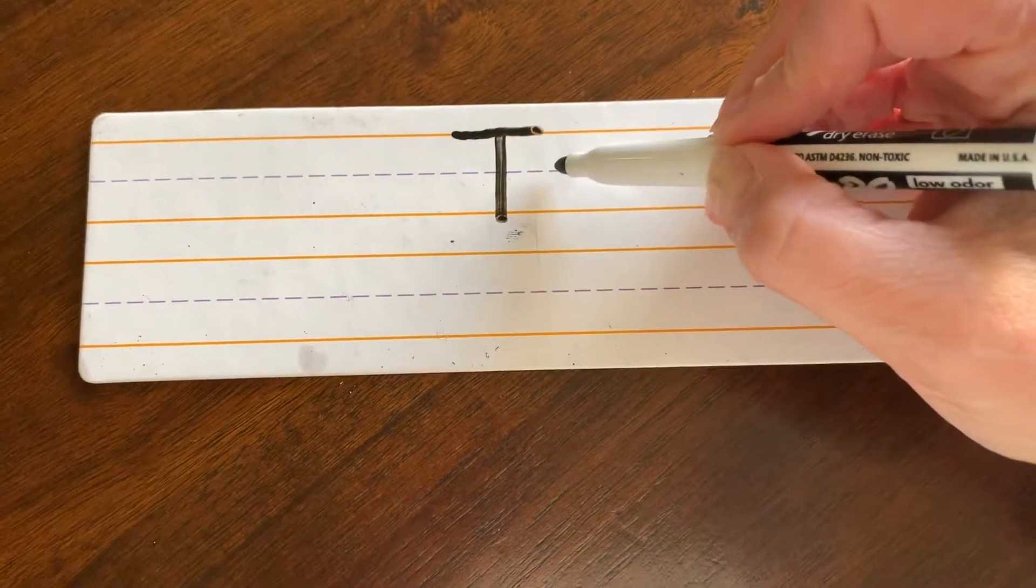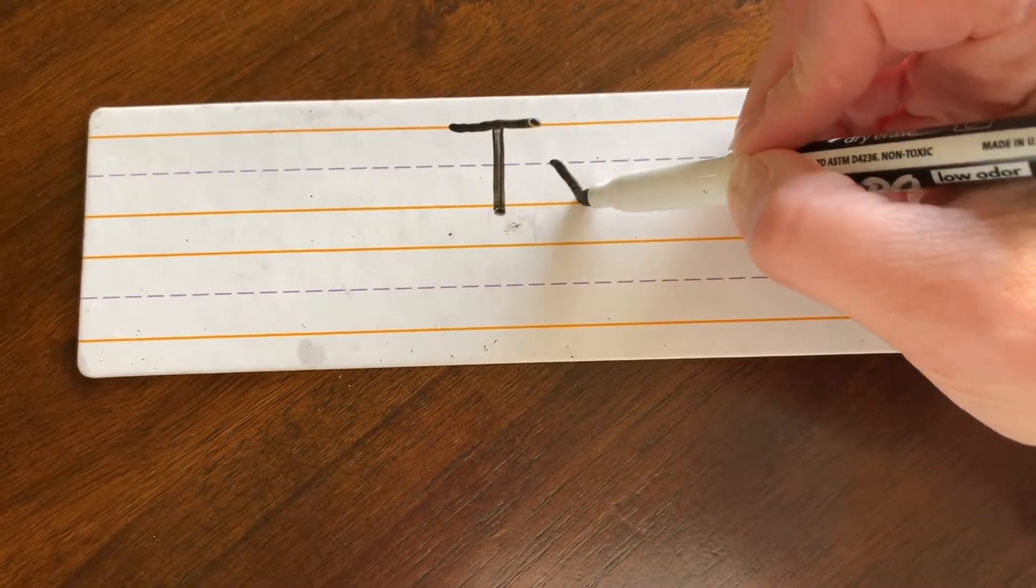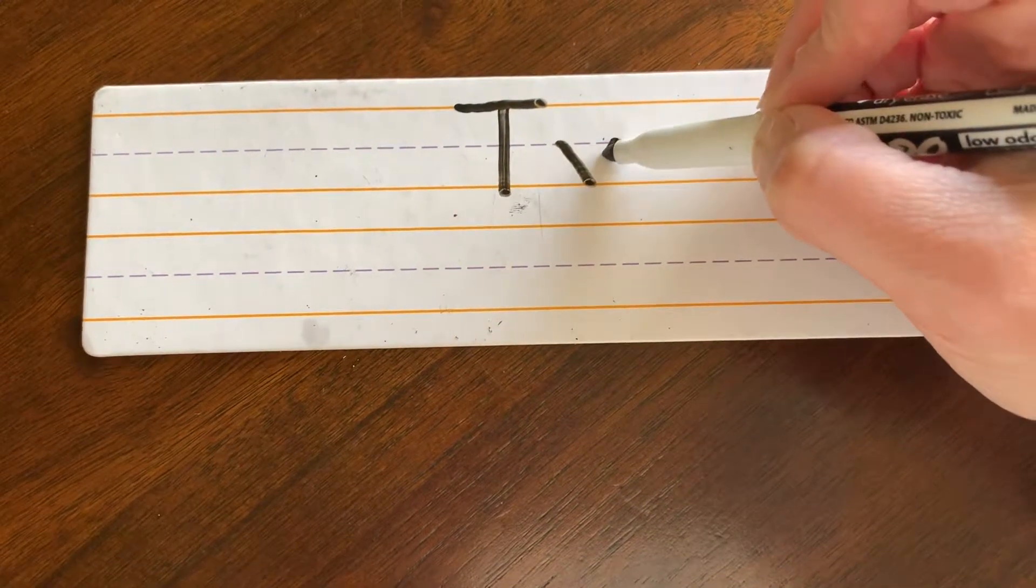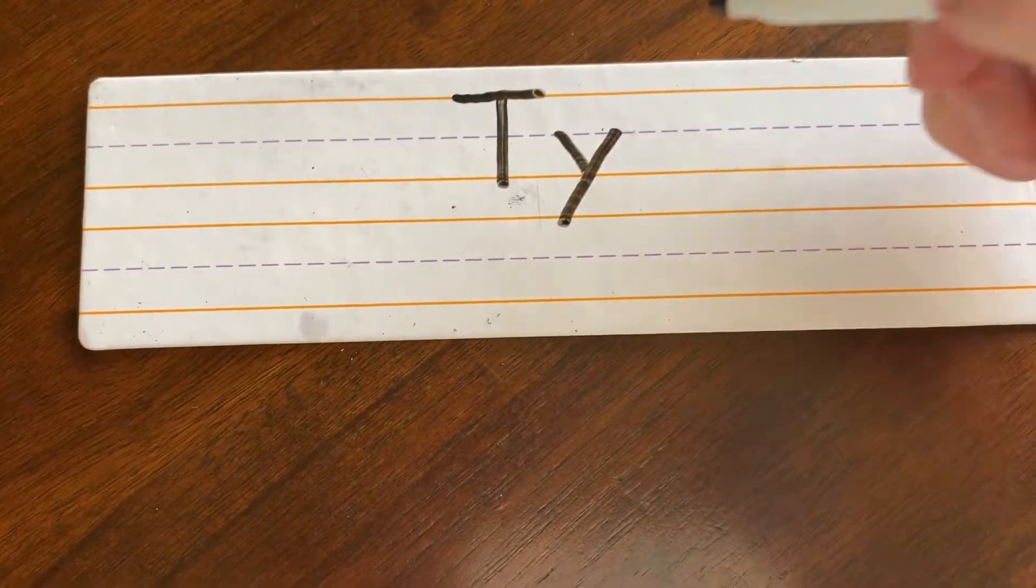Y. Start at the dotted line and slide to the ground. Pick up your pencil, go back to the middle and slide into the ground to make a hole digger Y.